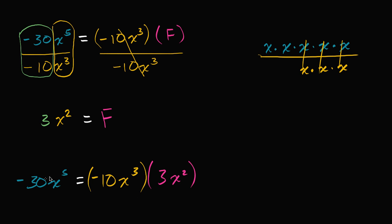Another way to describe what's going on in this equation: we could say that negative 30x to the fifth is divisible by either one of these factors — divisible by negative 10x to the third, or divisible by three x squared. Or we could say that three x squared is a factor of negative 30x to the fifth. We can make these claims about factors and divisibility because we're dealing with non-fractional coefficients and non-fractional exponents here.